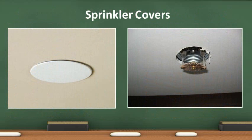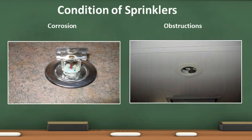Covers for recessed sprinkler heads will release and allow the sprinkler head to drop out at a certain temperature. The deflector will drop down and water will disperse over the protected area. Covers should be replaced when missing or painted. In the photo on the right, the sprinkler cover is missing and will need to be replaced. The sprinkler head in the photo on the left is corroded and this will cause it to malfunction. The bent and obstructed sprinkler head on the right will not protect the area being covered.